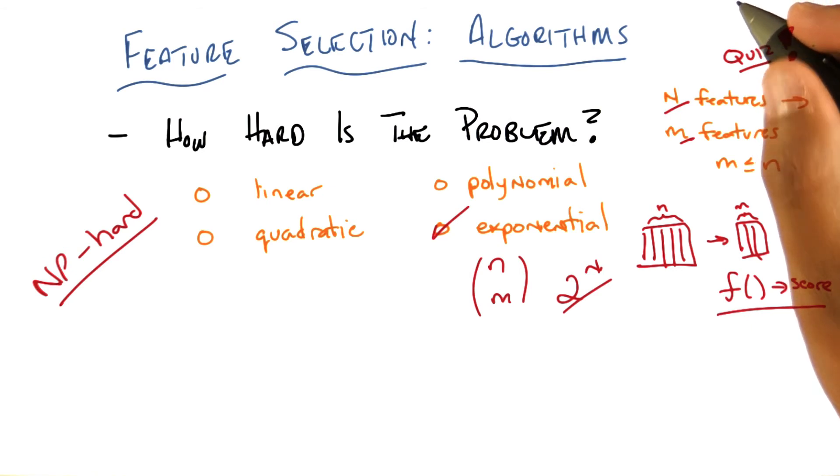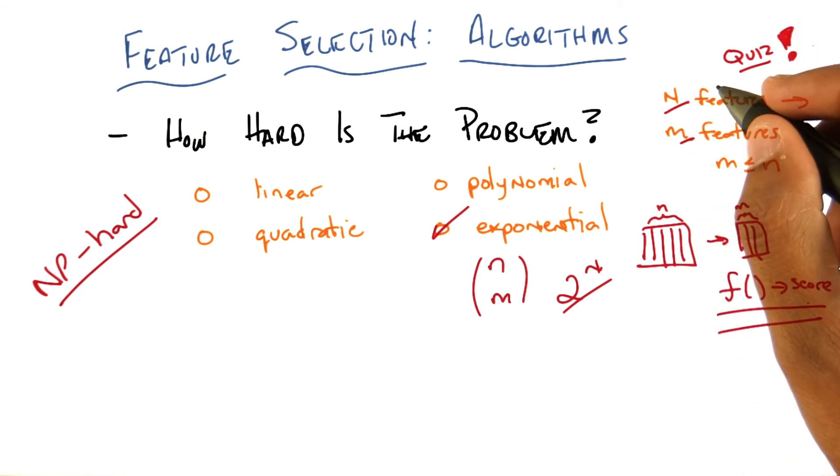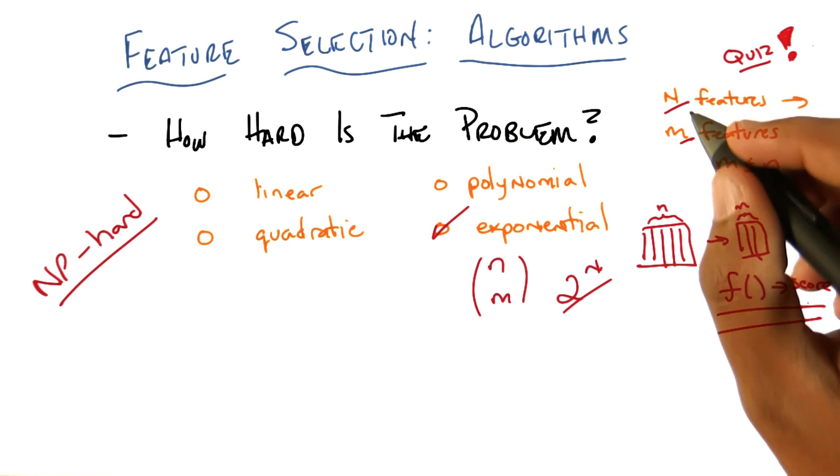So the real question we have in front of us is given that we've got yet another really difficult problem, in fact, a difficult optimization problem, how might we go about tackling it? And it turns out that there are two ways in general that people try to approach this problem.